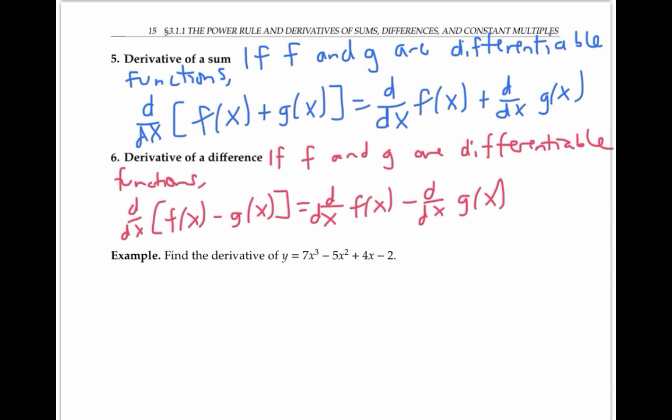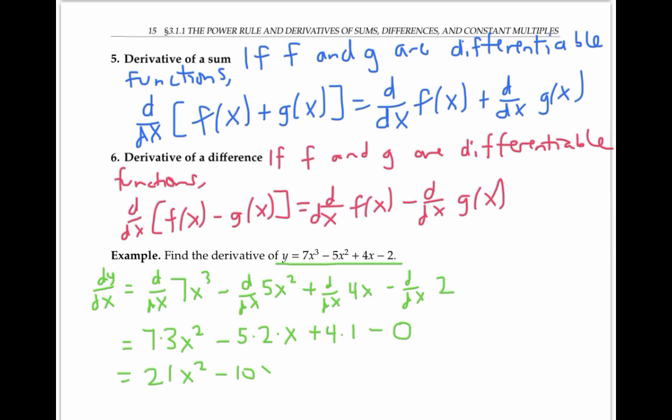Now let's use all these rules together to calculate the derivative of this polynomial. To find dy/dx, we can use the sum and difference rule to calculate the derivative of each term separately. Using the constant multiple rule and the power rule, we can bring out the 7, bring down the 3, get an x squared. Similarly, for the next term, 5 times 2 times x to the 1, 4 times the derivative of x, which is just 1, and the derivative of the constant 2 is just zero. So simplifying, we get 21x squared minus 10x plus 4, and notice that the derivative of the original polynomial is just another polynomial of one less degree.